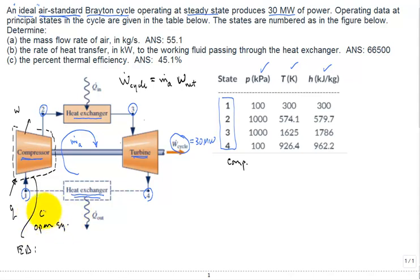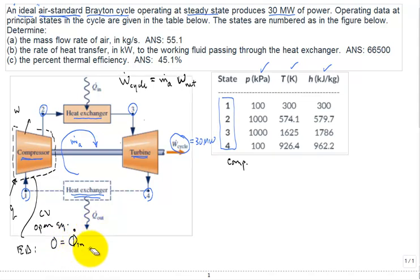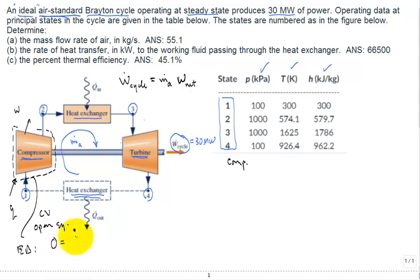A general way of writing it would be zero is equal to Q dot coming in. That's a bad-looking Q. Let me try that again.